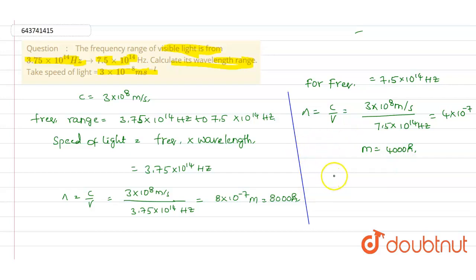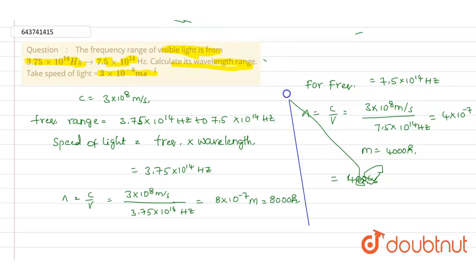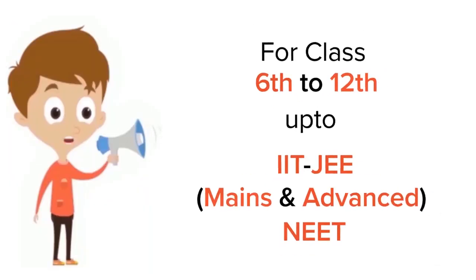So the wavelength range is 4000 nanometers to 8000 nanometers. This is the correct answer for this question.